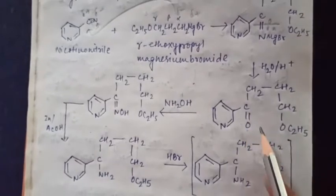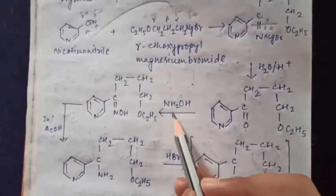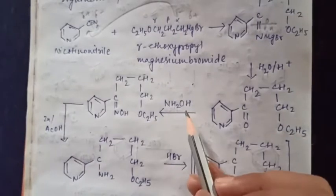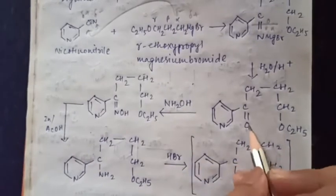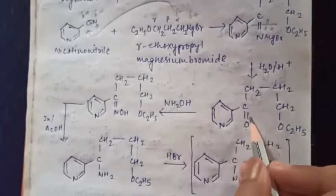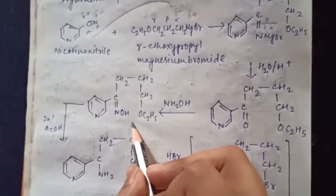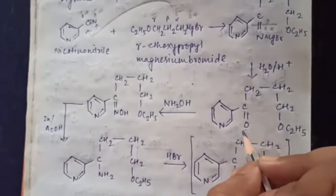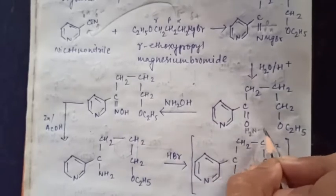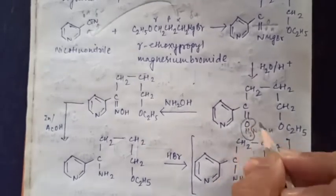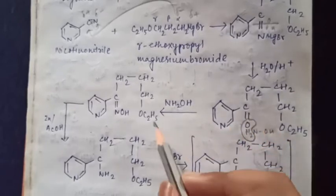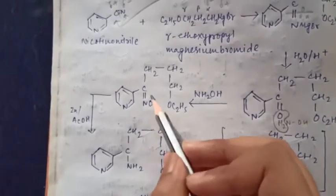Afterwards, we treat this hydrolysis product with hydroxylamine (NH2OH). The C=O reacts with NH2OH with loss of water to give C=NOH. This compound is called an oxime.